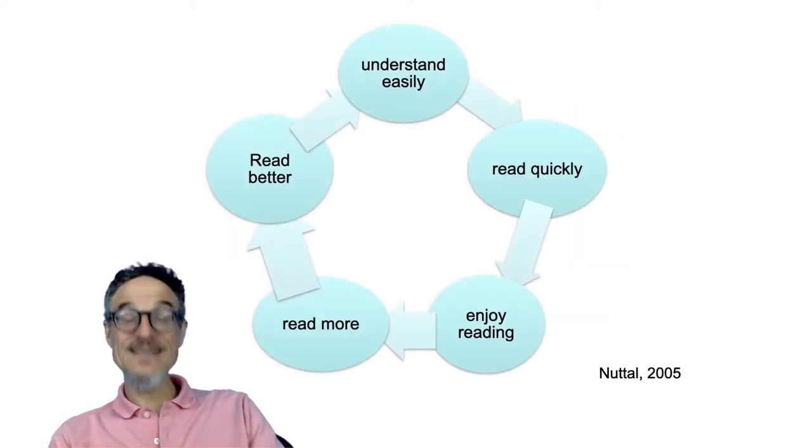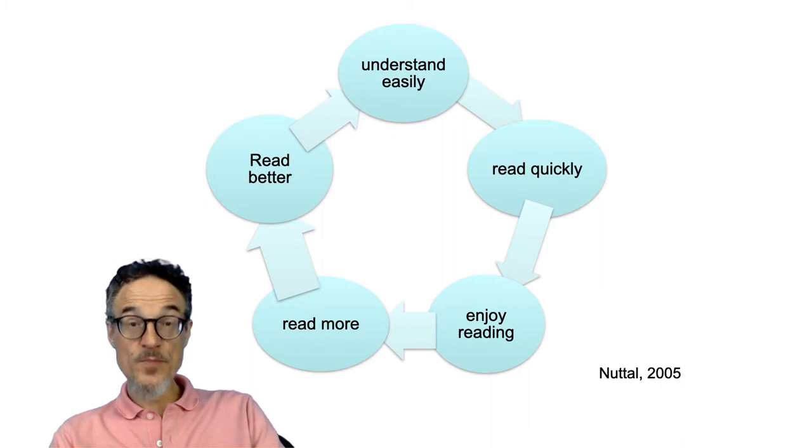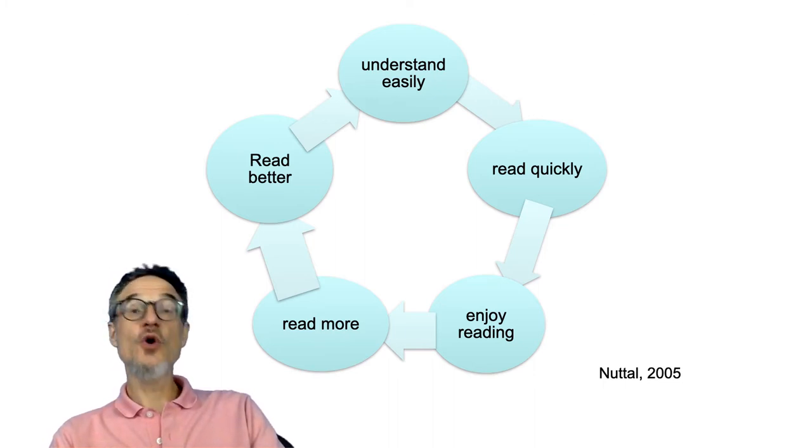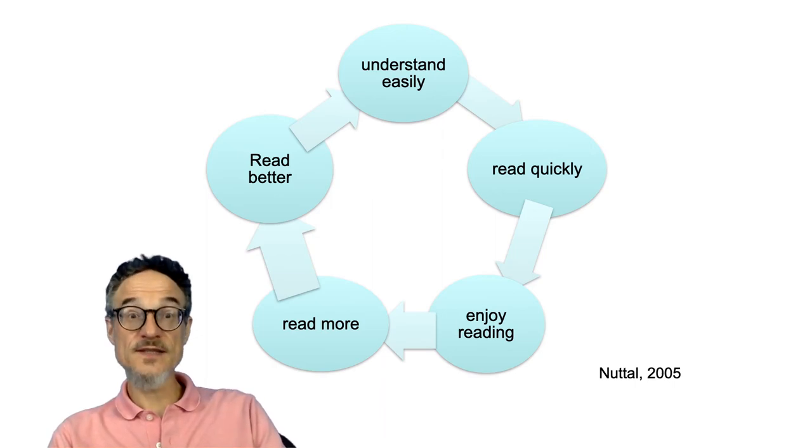We need to switch this around so that we understand easily. If we understand easily, we can read quickly. If we can read quickly, we can enjoy reading. And if we enjoy reading, we'll read more. And if we read more, we'll read better. And if we read better, we'll understand easily. And this is a virtuous cycle. So we need to get on this cycle.